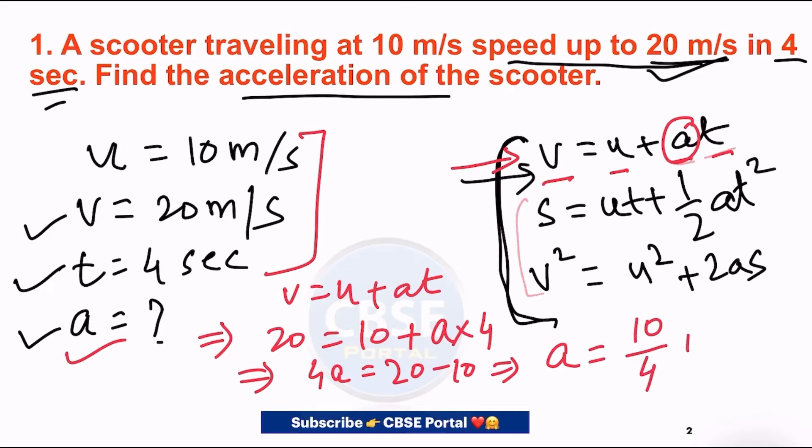One thing you must remember is to write the units. The unit of acceleration is meter per second square. If we convert this into decimal form, that will become 2.5 meter per second square. So the answer for this question, the acceleration, is 2.5 meter per second square.